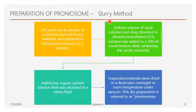In the slurry method, the first step is to prepare a stock solution — 250 microliters of stock solution prepared with surfactant and membrane stabilizer, which is either cholesterol or lecithin, dissolved in a 2:1 chloroform and methanol solution. A definite volume of this solution is then dissolved in 100 ml of 2:1 chloroform and methanol and taken in a round-bottom flask. The flask is connected to a rotary evaporator and rotated at 50 to 60 rpm to form a thin dried film, evaporating the solvent completely.